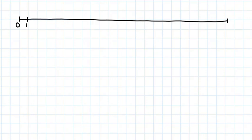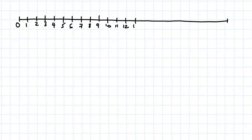On the number line you have zero, one, two, three, four, five, six, seven, eight, nine, ten, eleven, twelve, thirteen — and it goes on.